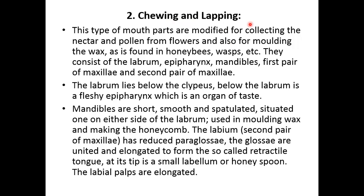The second type is the chewing and lapping type of mouthparts, present in honeybee and wasp. This type of mouthparts is modified for collecting nectar and pollen from flowers and also for molding wax. They consist of the labrum, epipharynx, mandibles, first pair of maxillae, and second pair of maxillae. The labrum lies below the clypeus. Below the labrum is a fleshy epipharynx which is an organ of taste. The mandibles are short, smooth, and spatulate, situated one on either side of the labrum, and used in molding wax and making the honeycomb. The labium — second pair of maxillae — has reduced paraglossae united and elongated to form the so-called retractile tongue, with a small labellum at its tip.